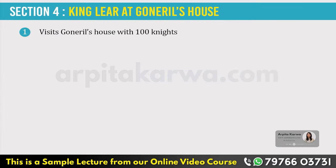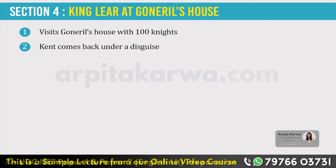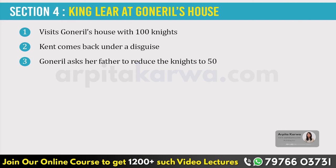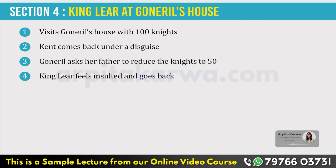King Lear comes and stays with Goneril along with his hundred knights. Kent comes back in a disguise, but King Lear does not recognize him and takes him into service. Now Goneril tells her employees not to give any special treatment to King Lear. She asks her father that he doesn't really need 100 knights and asks him to reduce them to 50. This makes King Lear feel insulted and he leaves her house.